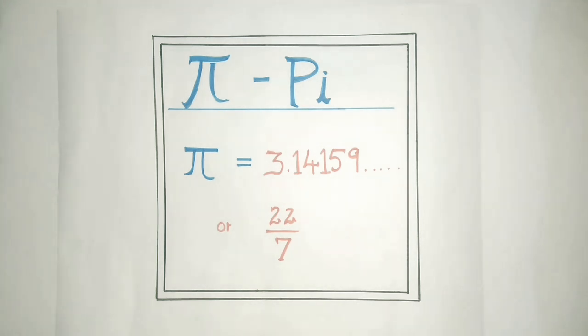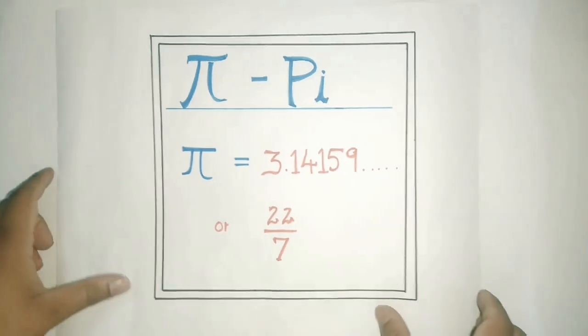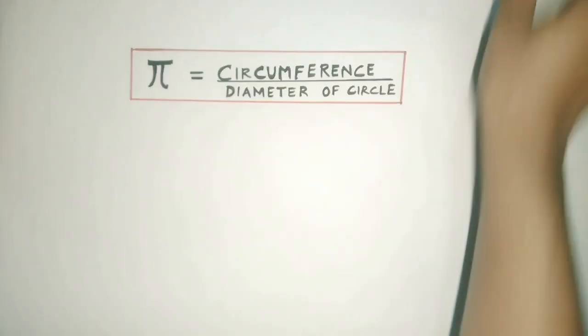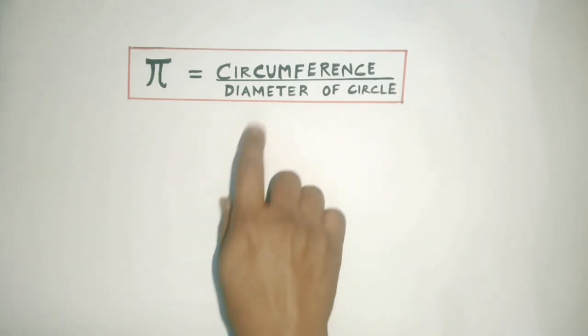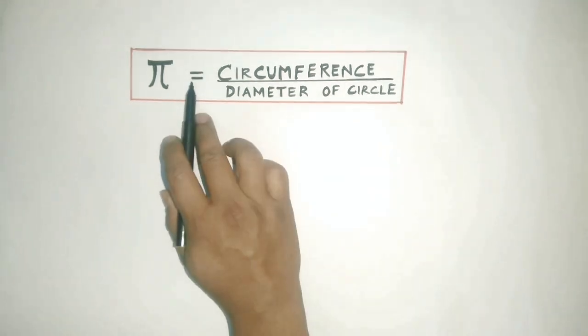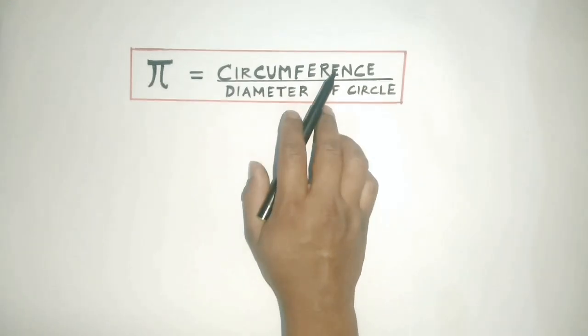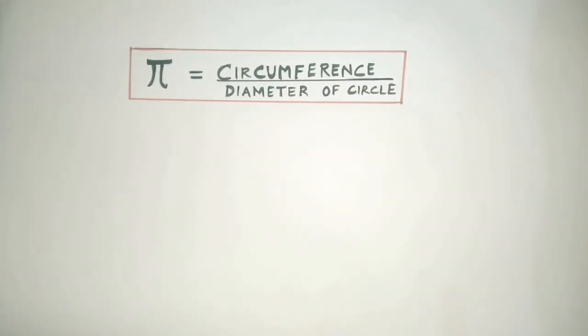For this purpose, let us try to understand what exactly is pi. In mathematics, pi is defined as the ratio of circumference of a circle to its diameter. So this is the formula: pi is nothing but circumference of a circle divided by its diameter.